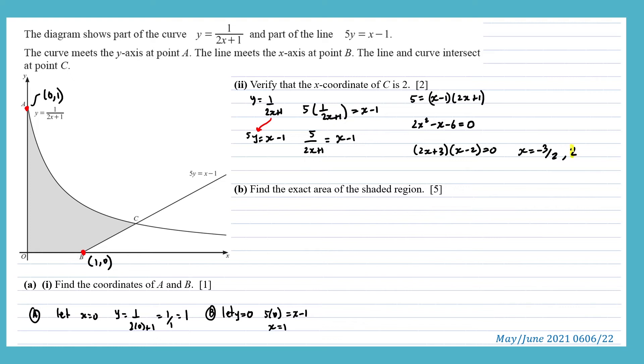So this shows that the x coordinate on the right side of the graph is 2. Negative 3 over 2 exists on the left side, which is not shown in the diagram. So we can mark this point off here as 2, 0. So the x coordinate of C is 2.